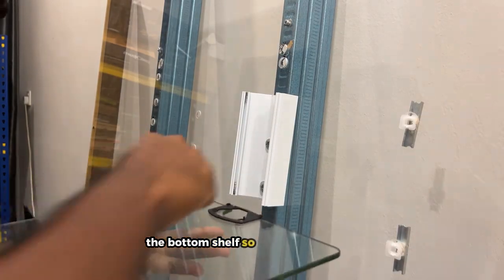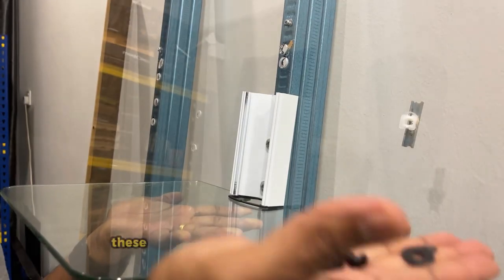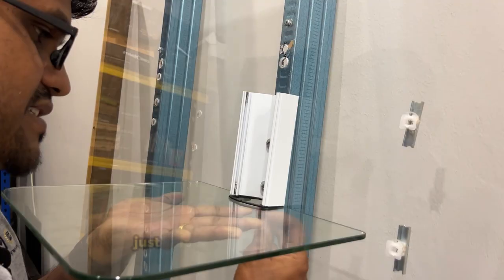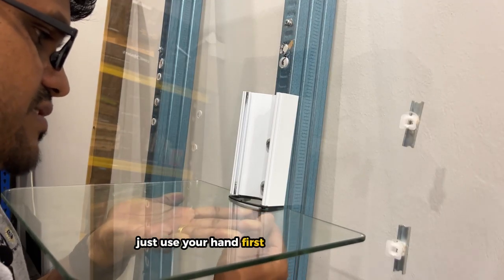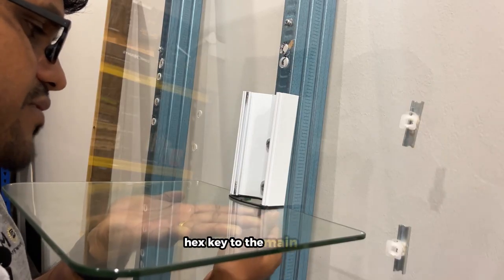Let me just do this. These hex screws are all given together with the mount with the washers, so just use your hand first. Just tighten the hex unit to the main unit.